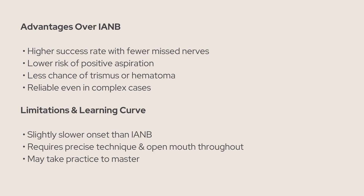Now let's quickly go through some pros and cons. One major advantage is the super high success rate — since the anesthetic is placed near the main nerve trunk, you're blocking multiple branches at once, which reduces the chance of missing accessory nerves like the mylohyoid. There's also a much lower chance of positive aspiration compared to the standard inferior alveolar nerve block, and less risk of complications like trismus or hematoma. On the downside, this technique takes practice and beginners often give up on it too early. Since the nerve fibers are more bundled at this level, it can take a little longer for full anesthesia to kick in, and you might need to wait or use a bit more anesthetic. Getting your patient to keep their mouth open can also be a struggle. That said, once you're comfortable with the Gow-Gates, it's a game changer — broader coverage, fewer injections, and a great option when your usual mandibular block just doesn't cut it.